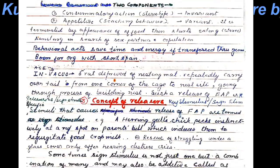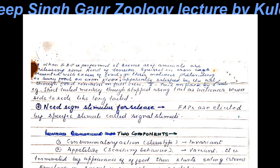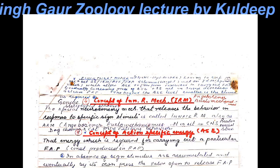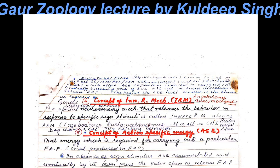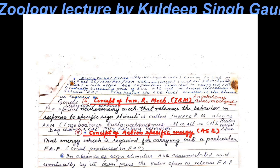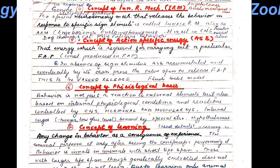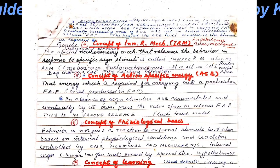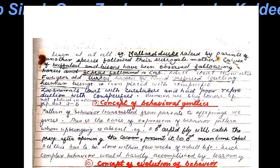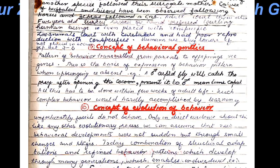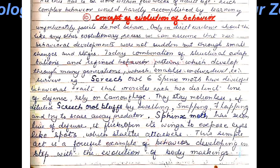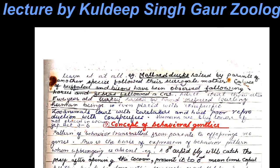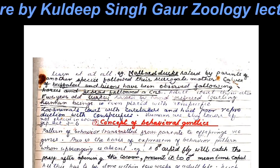The concepts include: releasers, innate release mechanism or IRM, action specific energy, the physiological basis of behavior, the concept of learning, behavioral genetics, and the concept of evolution of behavior — these are the concepts we are going to study.